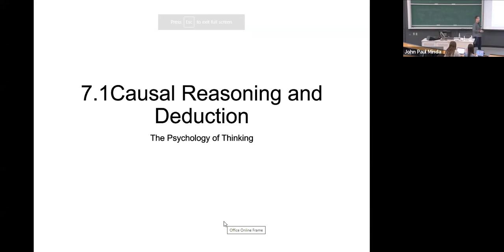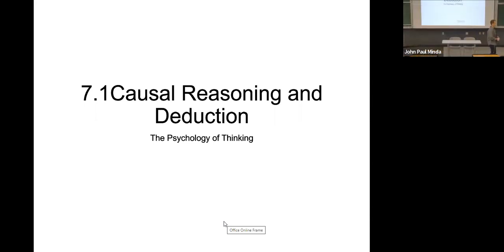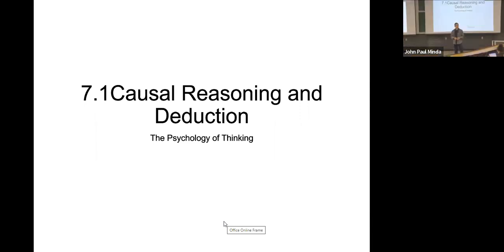We're going to continue where we left off. Last week we were talking about inductive reasoning, induction, and inferences. I suggested that was one of several different kinds of ways to use information to solve problems, to make predictions — a more active kind of thinking process. Today I want to talk about two other kinds of ways to do it.